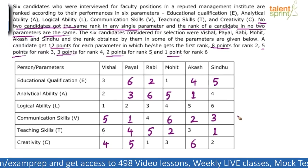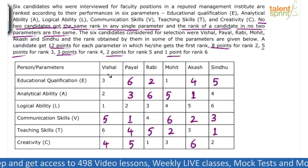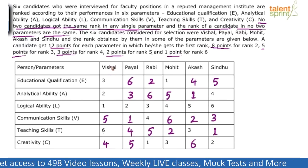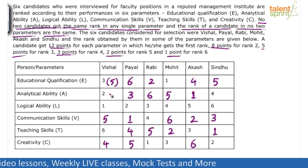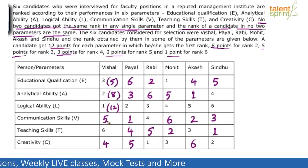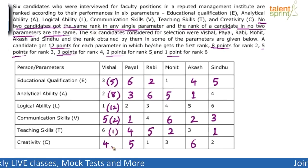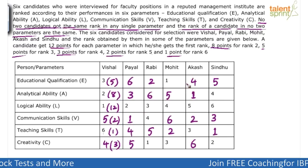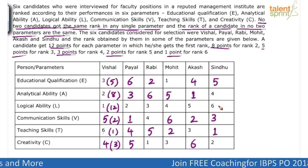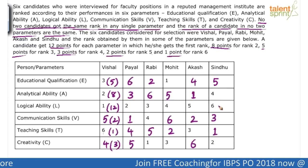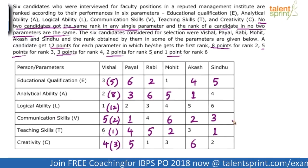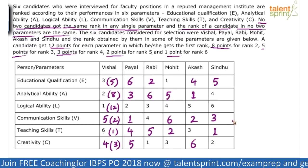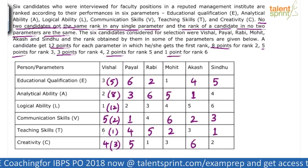Each rank carries specific points: rank 1 gives 12 points, rank 2 gives 8 points, rank 3 gives 5 points, rank 4 gives 3 points, rank 5 gives 2 points, and rank 6 gives 1 point. You can fill in these point values alongside the ranks in the table, since the questions will ask about total scores. Once the table is filled with both ranks and points, half the problem is solved.